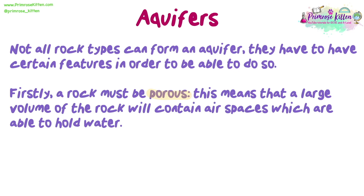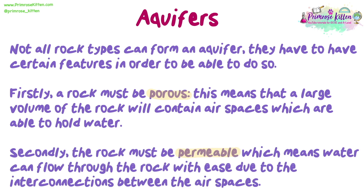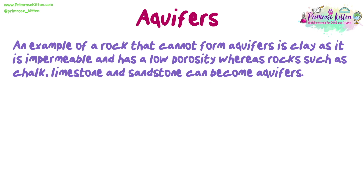Firstly, a rock must be porous. This means that a large volume of the rock will contain airspaces which are able to hold water. Secondly, the rock must be permeable, which means water can flow through the rock with ease due to the interconnections between the airspaces. An example of a rock that cannot form aquifers is clay, as it is impermeable and has low porosity, whereas rocks such as chalk, limestone and sandstone can become aquifers.